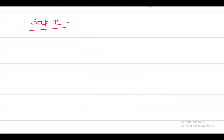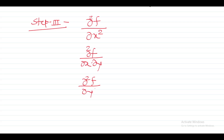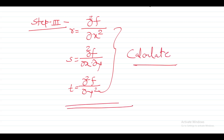After finding the critical points, we move to step three. Here we calculate the second-order partial derivatives of f. The first is ∂²f/∂x², the second is ∂²f/∂x∂y, and the third is ∂²f/∂y². We name these r, s, and t respectively — so r = ∂²f/∂x², s = ∂²f/∂x∂y, and t = ∂²f/∂y².